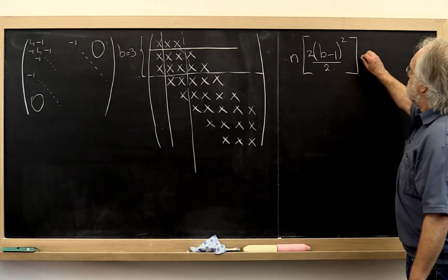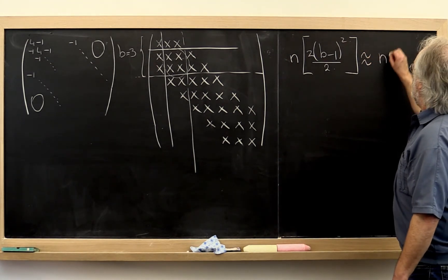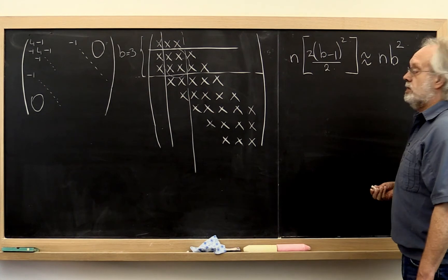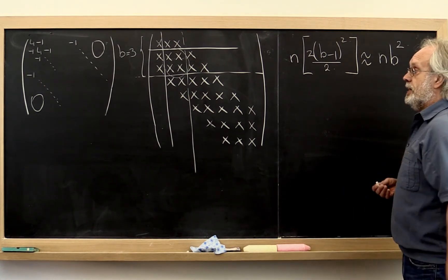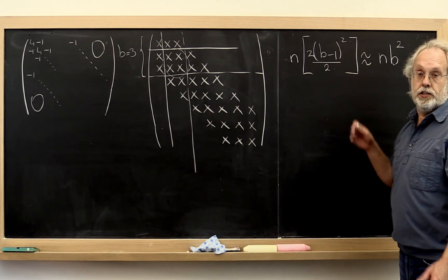And if you worked it out, that's approximately equal to n times b squared. And that's then the cost of taking advantage of the bounded structure of this matrix.